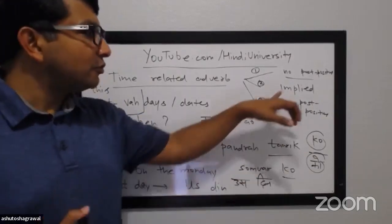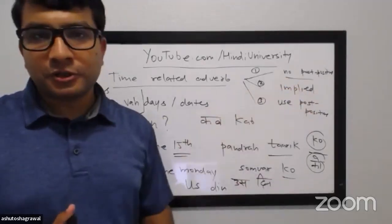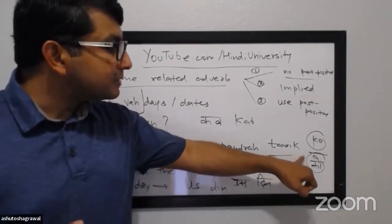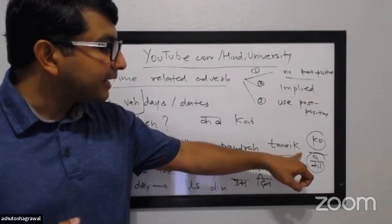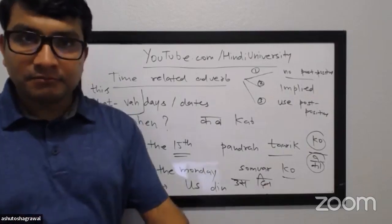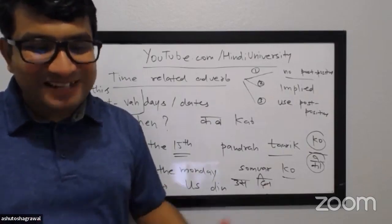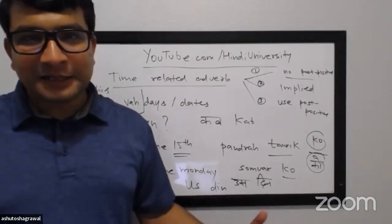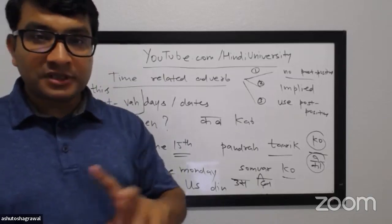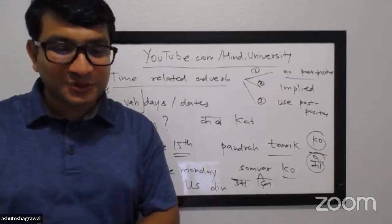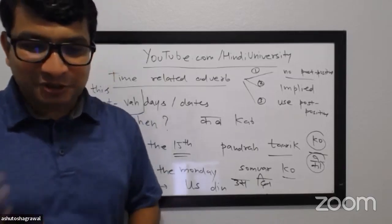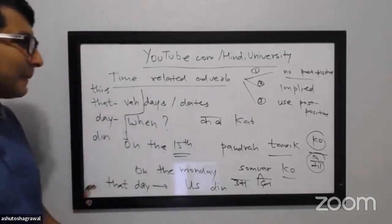The tricky thing is knowing which category applies. The theory is that most time-related adverbs originally used post-positions, but over time speakers dropped them gradually — which is why even today some Hindi speakers use post-positions with certain words while others don't. This variation shows the language has evolved over time.